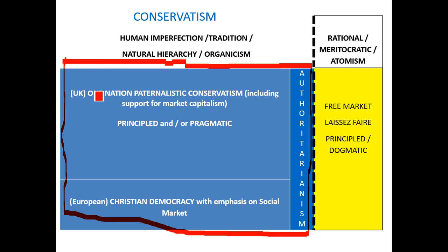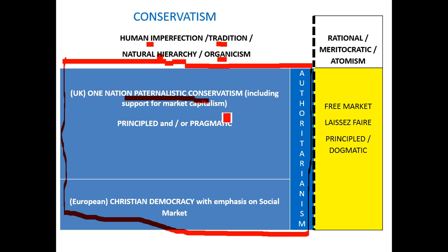This blue block represents the one-nation, traditional, paternalistic strand of conservatism, which buys into the core themes of human imperfection, veneration of tradition, natural hierarchy, organic society, and a veneration of private property. The one-nation paternalistic conservatism we've covered in previous essays, and you can decide for yourself whether its policies are principled or pragmatic.